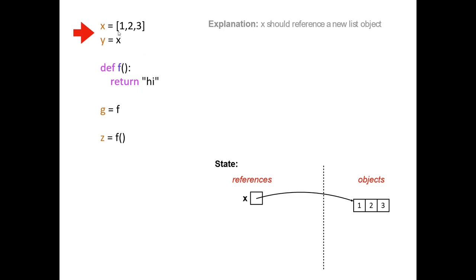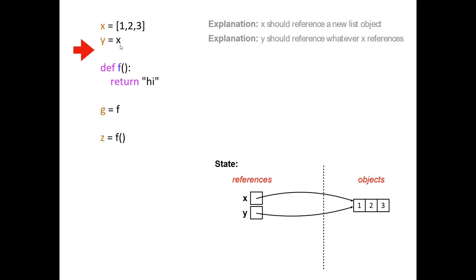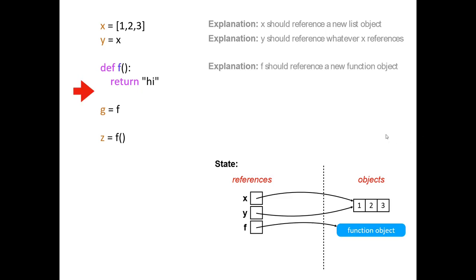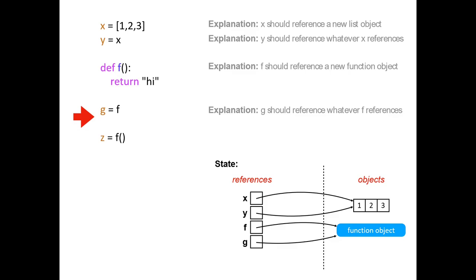Let's step through this example. The first line creates a brand new list object and x refers to that list. The second line creates another variable y set equal to x, meaning y refers to the exact same object as x. Next, we define a function — this creates a brand new function object with all the code inside, and f is a variable that refers to that function object. When we say g equals f, g becomes a variable that refers to whatever f refers to, which is that same function object. So both g and f reference the same function object.